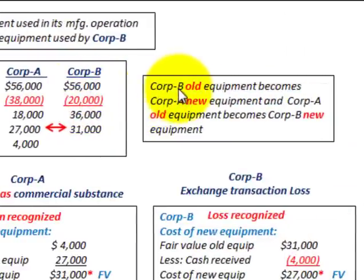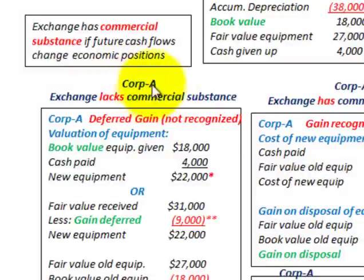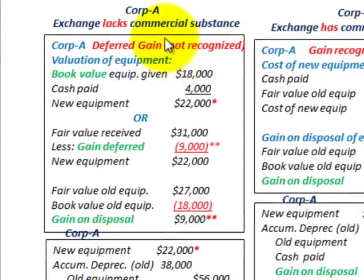So let's go through our definitions first. For Corporation B, their old equipment becomes Corporation A's new equipment, and Corporation A's old equipment becomes Corporation B's new equipment. We'll be referring to that when we go through our calculations. The first thing we're going to be looking at is Corporation A, where you either have commercial substance involved in the exchange of this equipment or you don't. The exchange has commercial substance if the future cash flows change the economic positions. We're starting with Corporation A where the exchange lacks commercial substance.